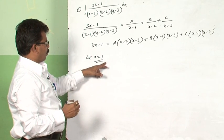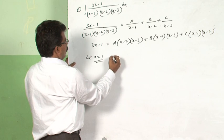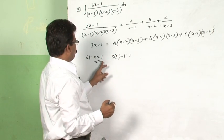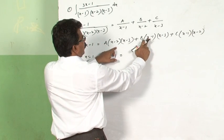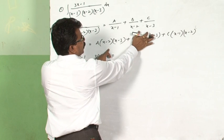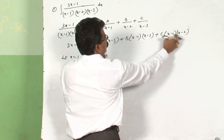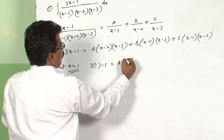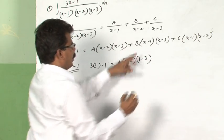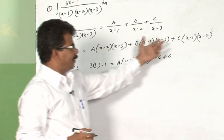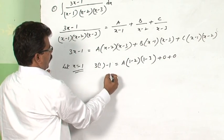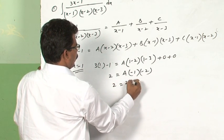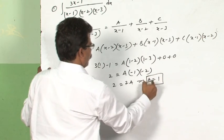Let x = 1. The LHS becomes 3(1) − 1 = 2. The B and C terms both contain (x − 1), so they become 0. The remaining term gives A(1 − 2)(1 − 3) = A(−1)(−2) = 2A. Therefore 2 = 2A, which implies A = 1.